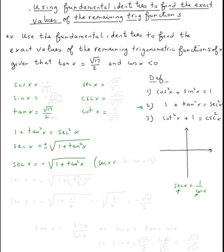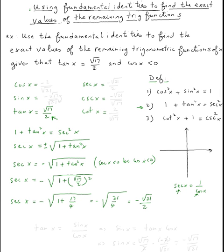Secant is negative because cosine is negative — secant and cosine always have the same sign. Now we plug in the tangent: square root of seventeen over two, and square that. So secant of x equals negative square root of one plus seventeen over four. Four plus seventeen is twenty-one over four, so secant equals negative square root of twenty-one over two.